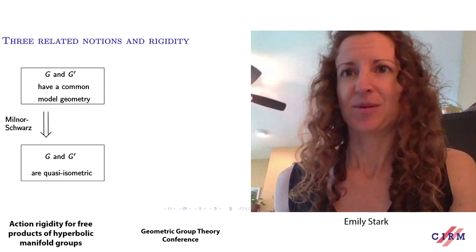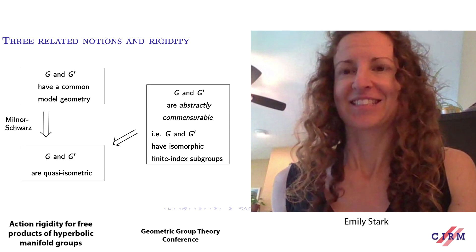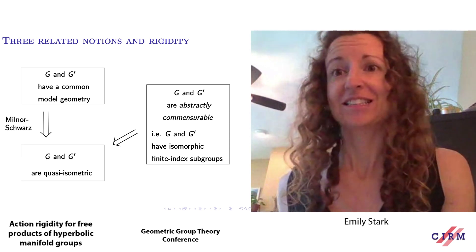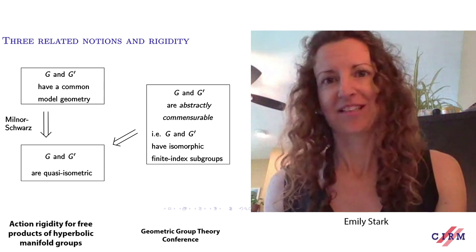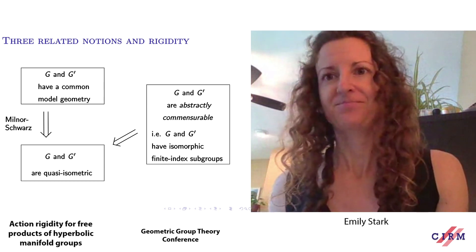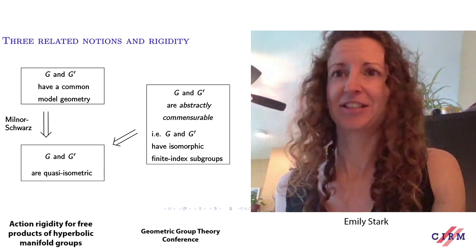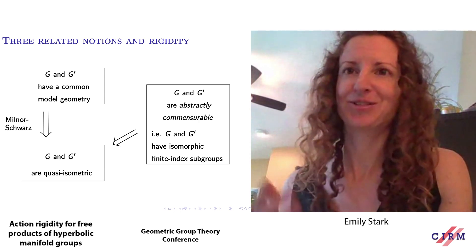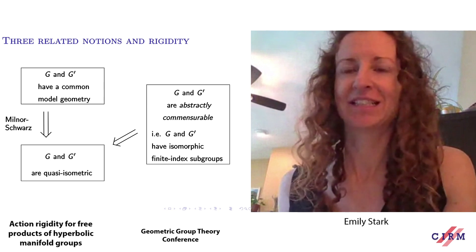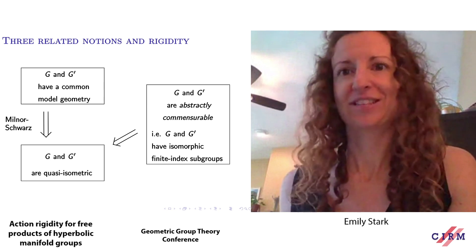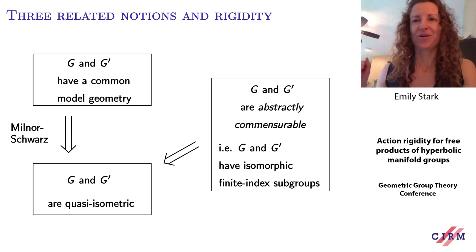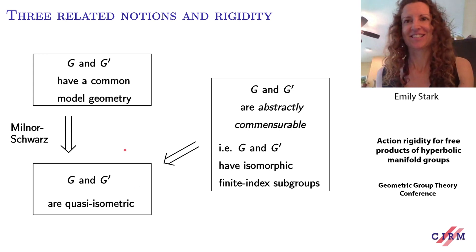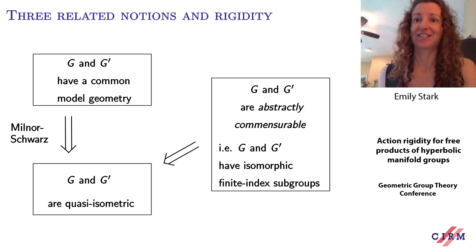We say that groups G and G prime are abstractly commensurable if they contain finite index subgroups that are isomorphic. Because any finitely generated group is quasi-isometric to any of its finite index subgroups, if two groups are abstractly commensurable, then they are quasi-isometric. The four missing implications in this diagram fail in general, and examples will be given in this talk.